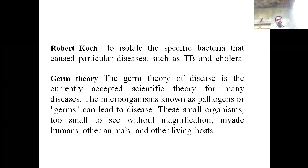Robert Koch isolated specific bacteria that caused particular diseases such as TB and cholera. He proposed the germ theory. The germ theory of disease is the currently accepted scientific theory for many diseases. Microorganisms known as pathogens — meaning disease-causing germs — can lead to disease. They are small organisms, too small to see without magnification, requiring a microscope. They affect humans and other living hosts.